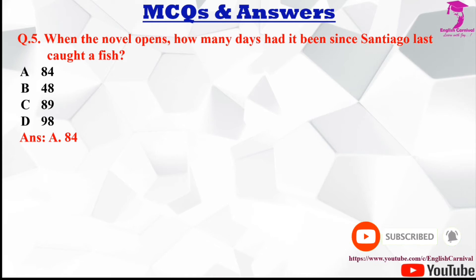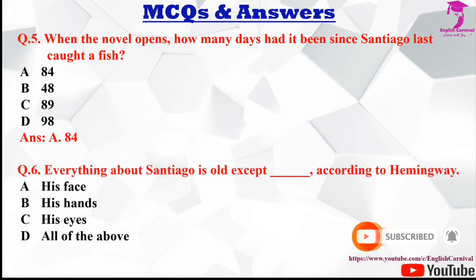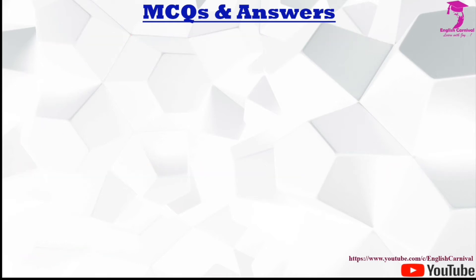Question number six: Everything about Santiago is old except dash, according to Hemingway. Options are A his face, B his hands, C his eyes, and D all of the above. The correct answer is C, his eyes.